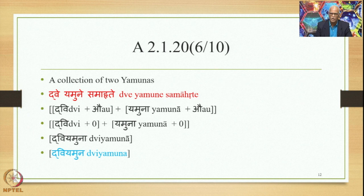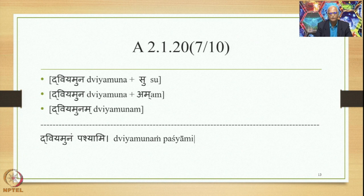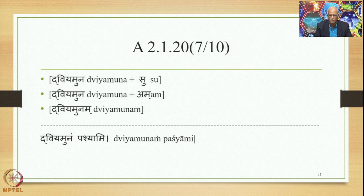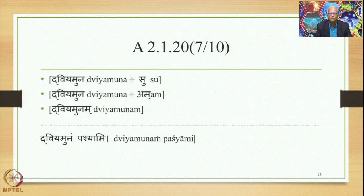When we use this Samasa in the sentence, we add suffix Su: Dvi Yamuna + Su. Dvi Yamuna is an Avyaibhava Samasa, so it is an Avyaya, and Su would normally be deleted by Avyaibhava Supaha. But because Dvi Yamuna is an Avyaibhava Samasa ending in short A, Su is not deleted; rather it is substituted by Am by the exception Sutra Navyaibhava Atom Pavancha Myaha. So finally we get the form Dvi Yamunam. In the sentence: Dvi Yamunam Pashyami — I see the collection of two Yamunas.